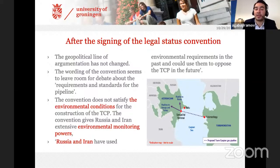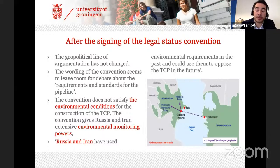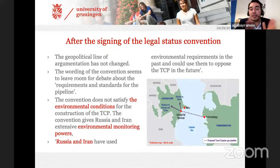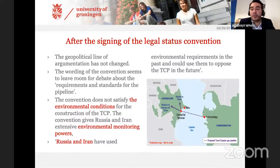The Trans-Caspian pipeline is a draft project between Turkmenistan and Azerbaijan to deliver gas to the European Union. Again, geopolitical literature argued that a new conflict will emerge among Caspian Sea countries, dividing them into two groups: Iran and Russia on one hand, and Azerbaijan, Kazakhstan, and Turkmenistan on the other. So the negative image continued after signing the convention. My main argument here is that the relevant literature doesn't understand the history of this legal agreement and the history of environmental cooperation.